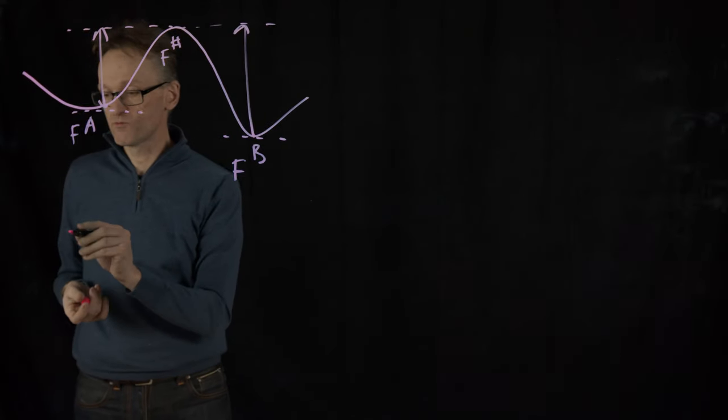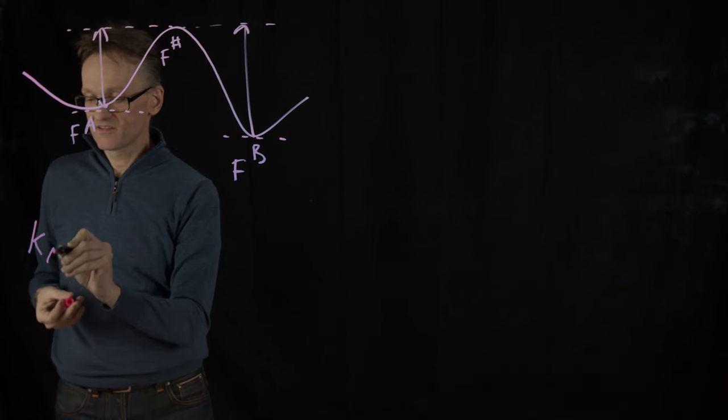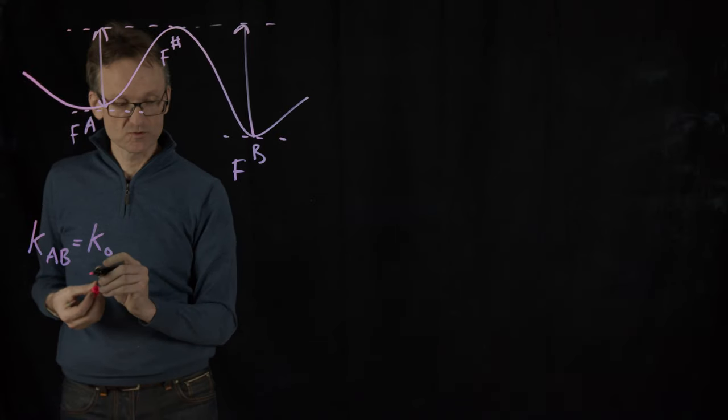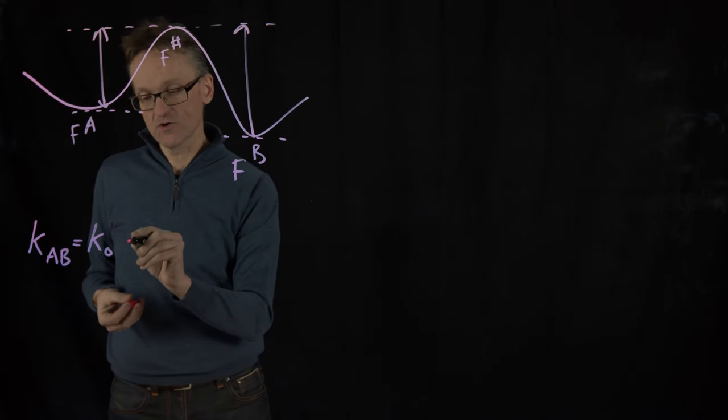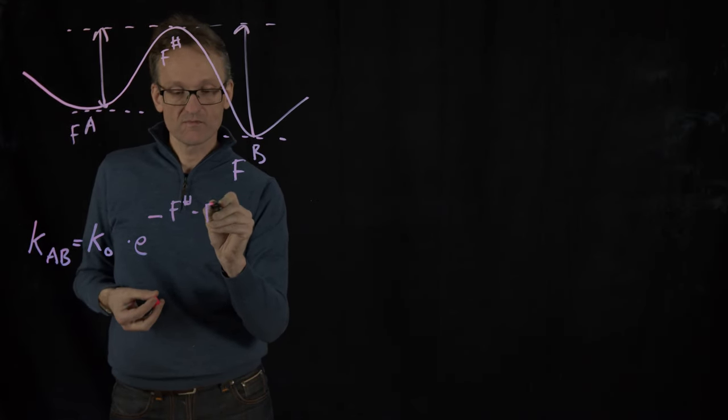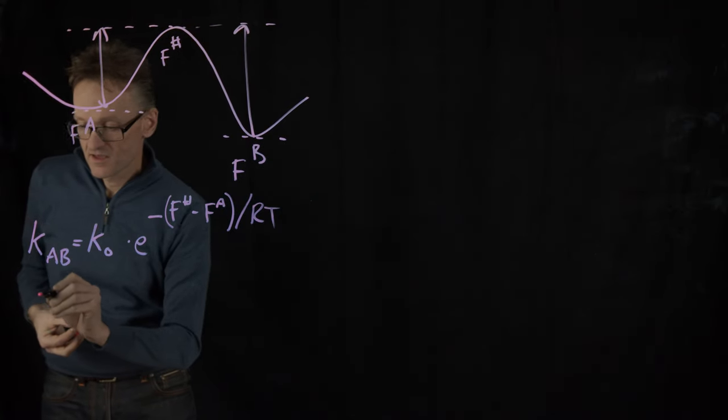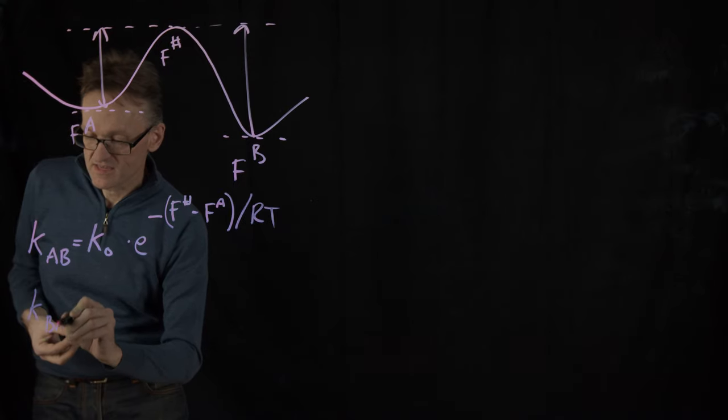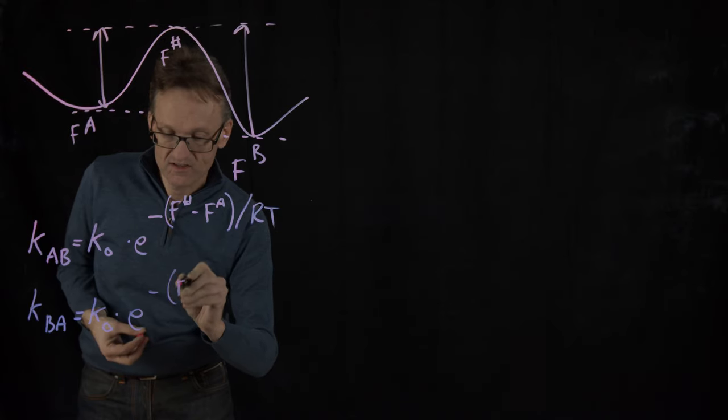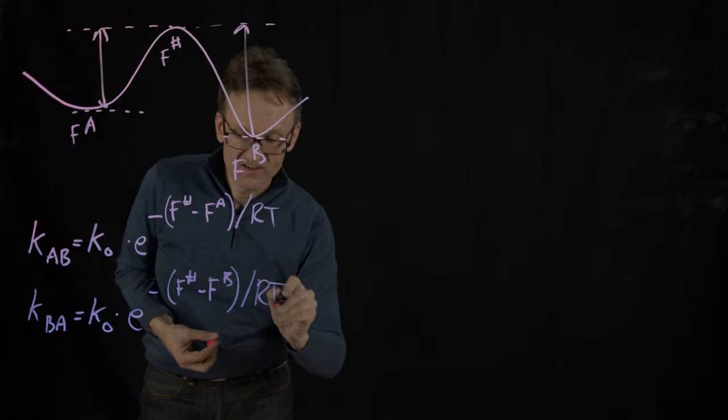Both of these we can describe with kinetics. So the rate of the reaction A to B is going to be proportional to some fundamental constant K₀ multiplied by e raised to minus F sharp minus F_A divided by RT. And similarly, K_BA is going to be equal to K₀ multiplied by e raised to minus F sharp minus F_B divided by RT. You know this by now.